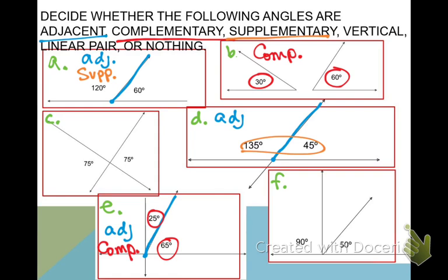135 and 45, yes. E was complementary, so definitely not. And then F, 90 and 50? No.